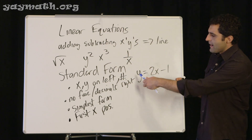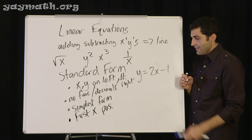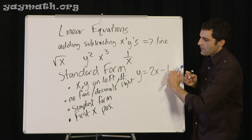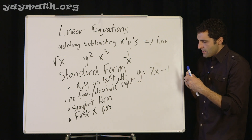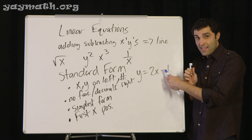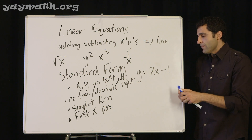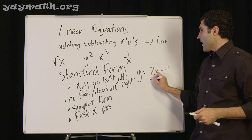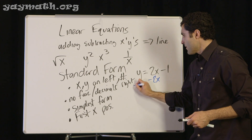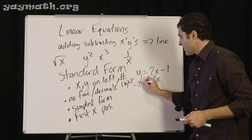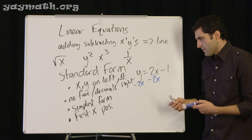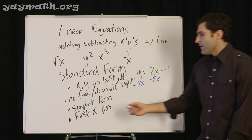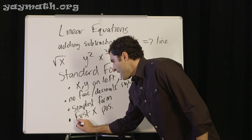So if we want to take the line y equals 2x minus 1 and put it in standard form, we bring all the x's and y's to the left side and keep the number on the right. To get x on the left, we subtract 2x from both sides, putting x first and y second.